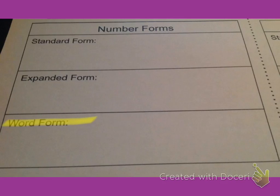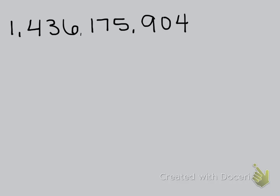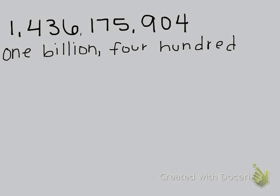The third number form is word form. Word form is a way to write a number using words, and you write the number the same way that you read it. So we have the number 1,436,175,904 and we're going to write it using words for each number. So instead of writing the digit 1, I'm going to write the word — one billion. When we write a number in word form, we put a comma after the name of the period. So we have 400, and I'm not going to put the word million until I get to the comma, so 430, then four hundred thirty-six million, followed by a comma.